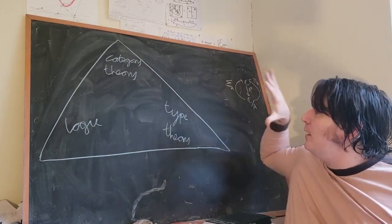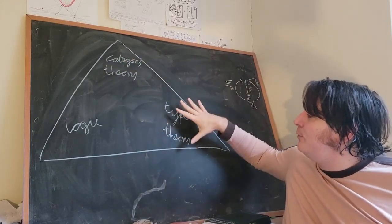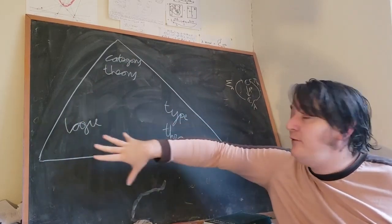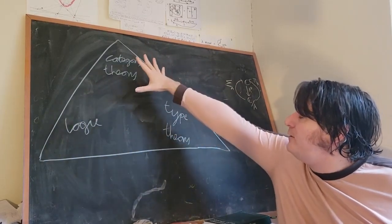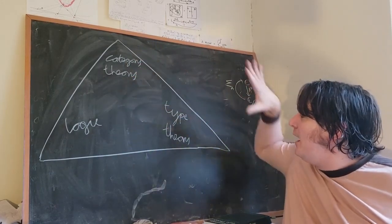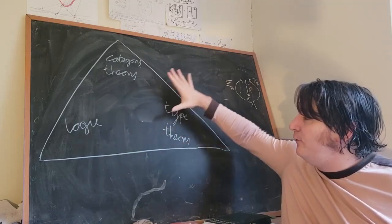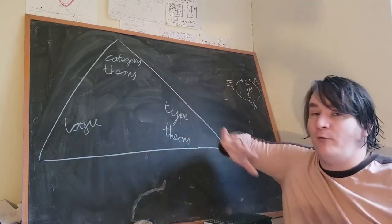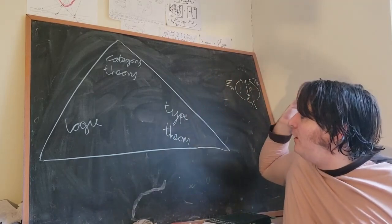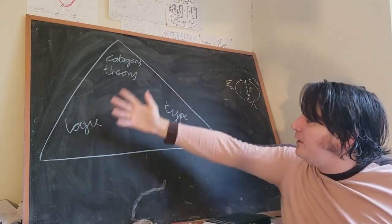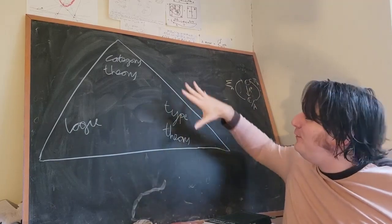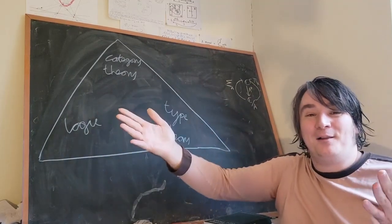In this triangle, we have three really important subjects. Logic, which some would call the basis of thought. Category theory, which is one of the most powerful languages we've ever created. And type theory, which gives us the ability to formalise mathematics and put it into computers. One of the most amazing discoveries of recent times is that, in a sense, all three of these subjects are exactly the same.